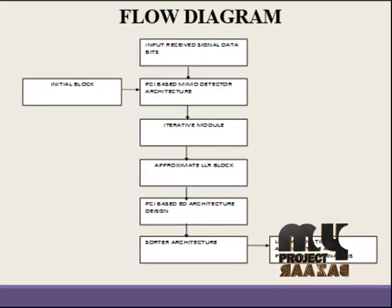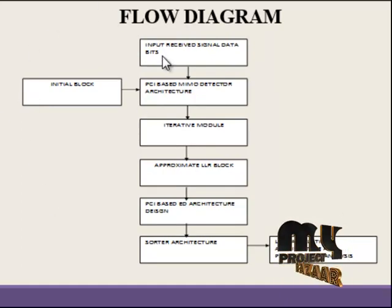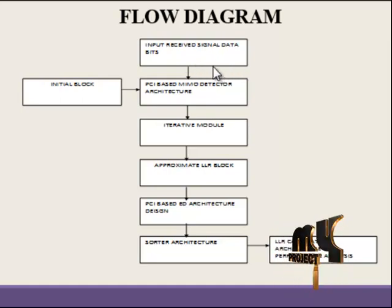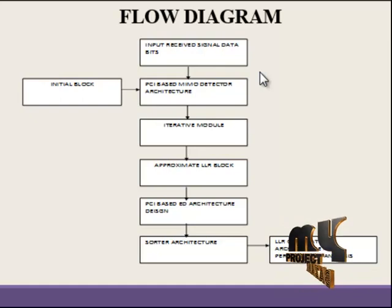Now we are going to discuss about our product flow diagram. In our process we are using the flow input received signal data bits. So we use an 8-bit MIMO detector architecture to collect the signal input on the receiver side. The main work is to reduce the energy level for the signal transmission line and reception process. The MIMO detector architecture is placed for the channel receiver and selects in these sections.